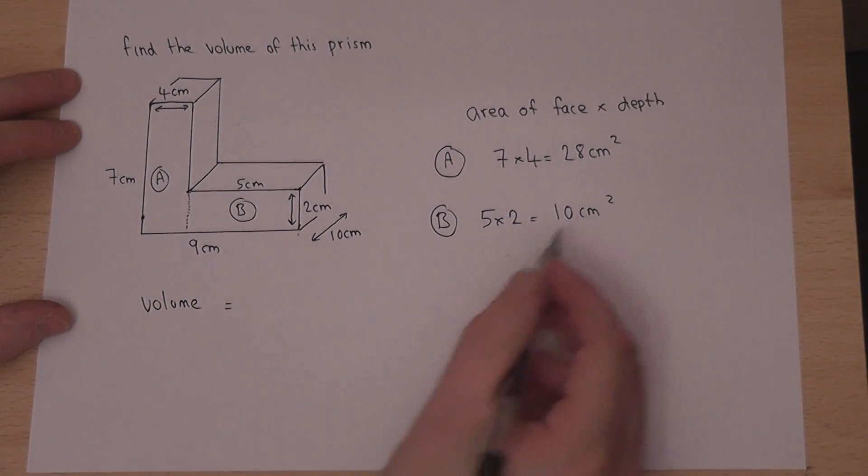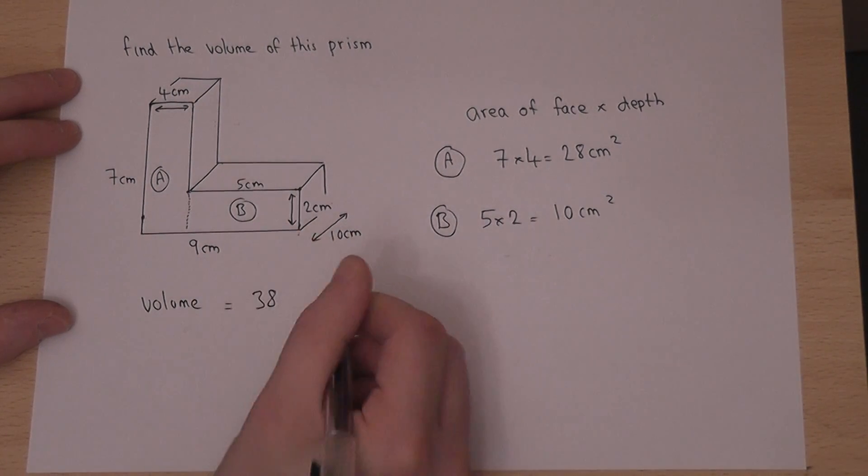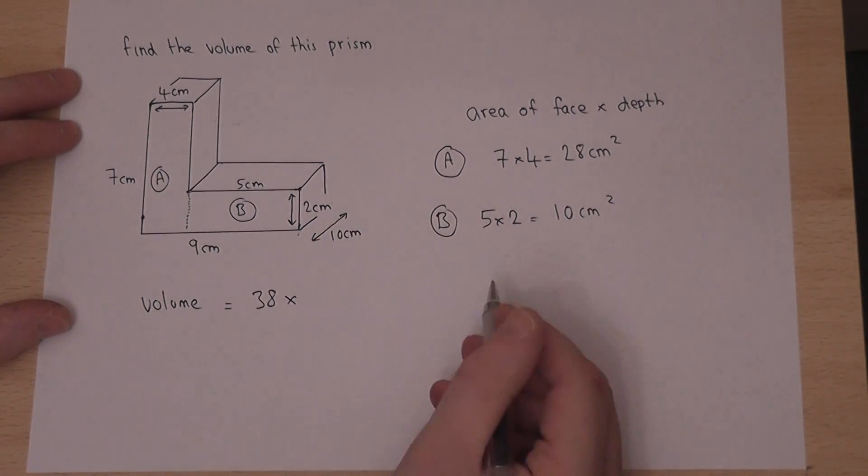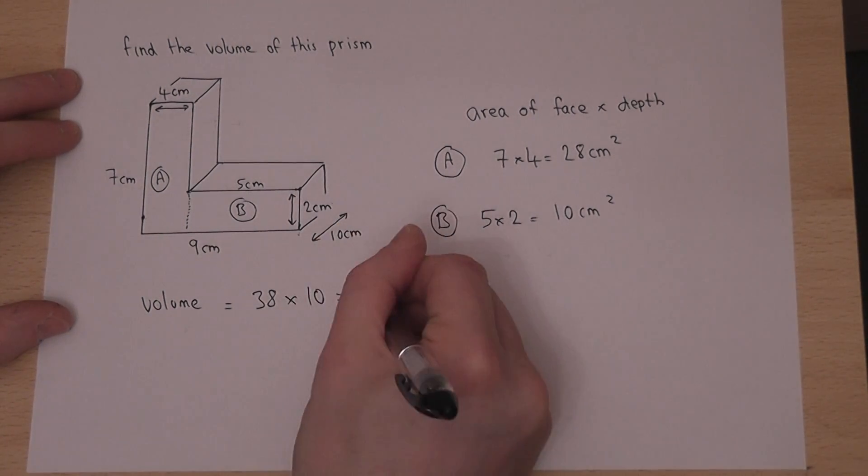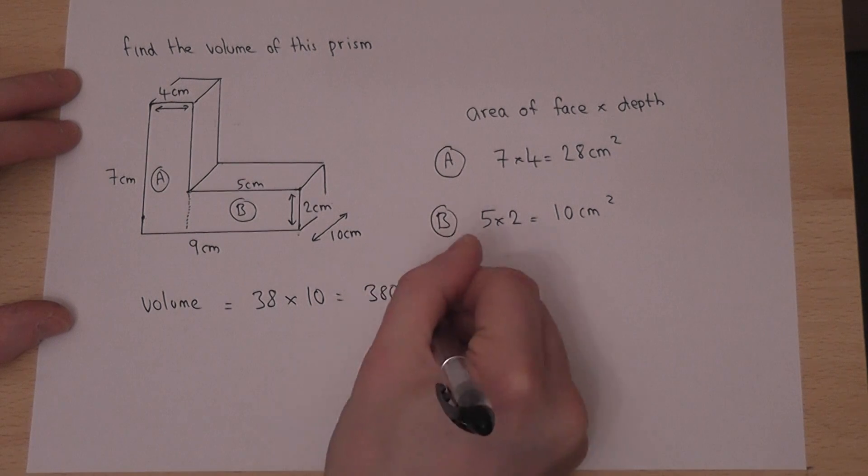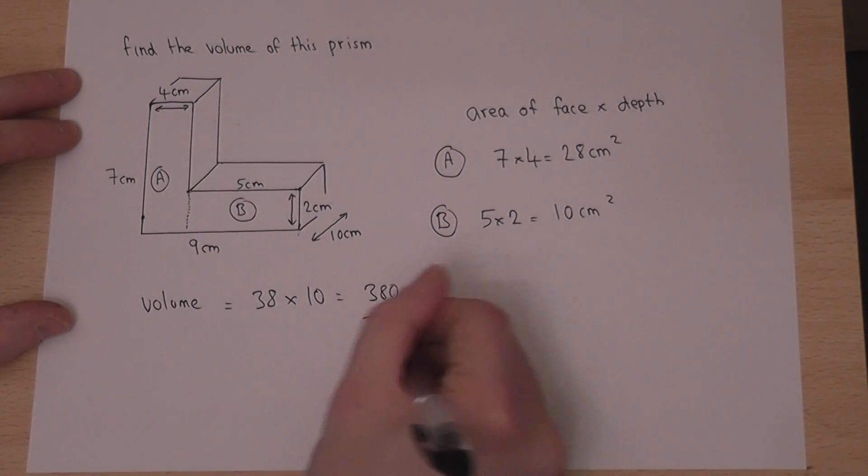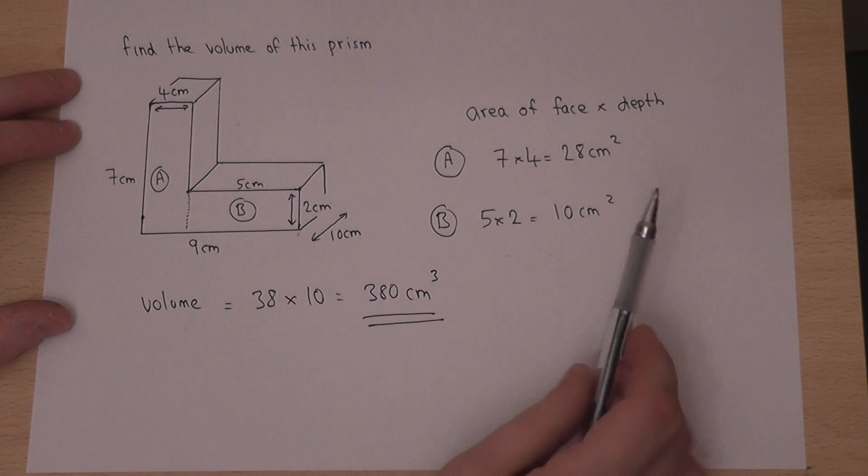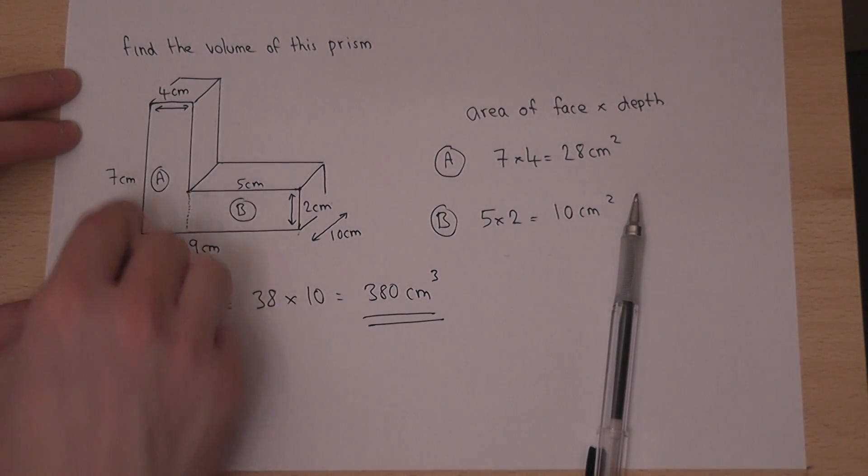So the volume is 38, which is the entire area, times the depth, which is 10, which is 380 centimeters cubed. So again, to find a volume, we find the area of the cross section, or the face, and times the depth of the shape.